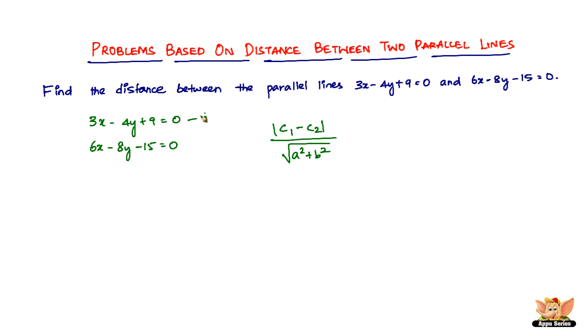Let's say this is equation 1 and this is equation 2. Multiplying the first equation by 2 throughout, we get 6x minus 8y plus 18 equal to 0. In that case, it makes the a and b equal.